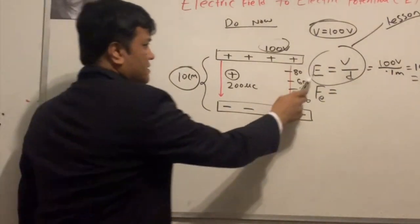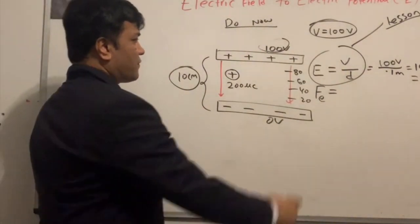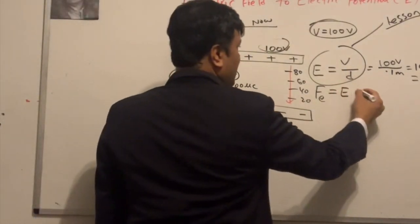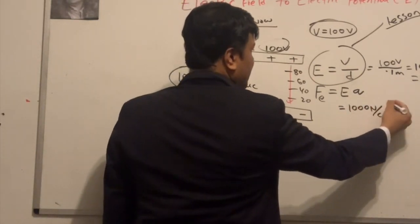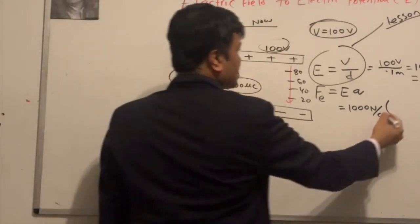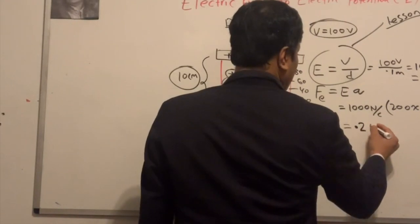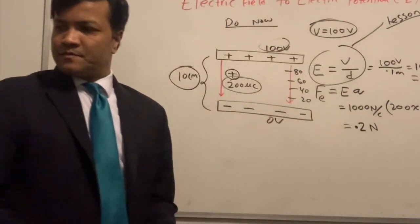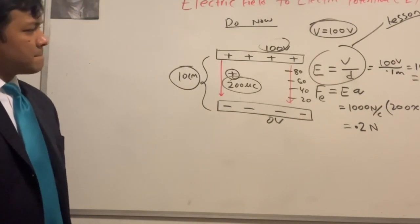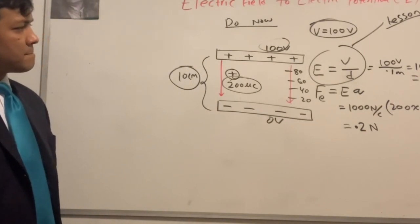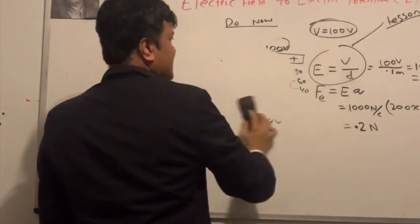The electric field unit is newtons per coulomb, which is equivalent. Now for force: F = Eq. E is 1000 N/C and q is 200 × 10⁻⁶ coulombs, giving F = 0.2 newtons.